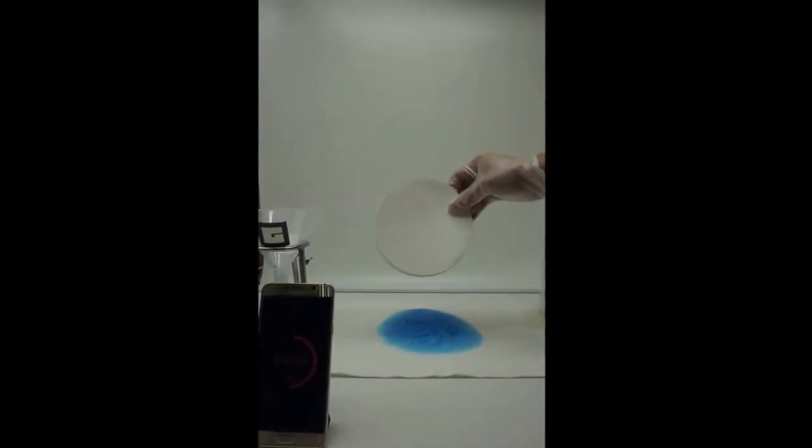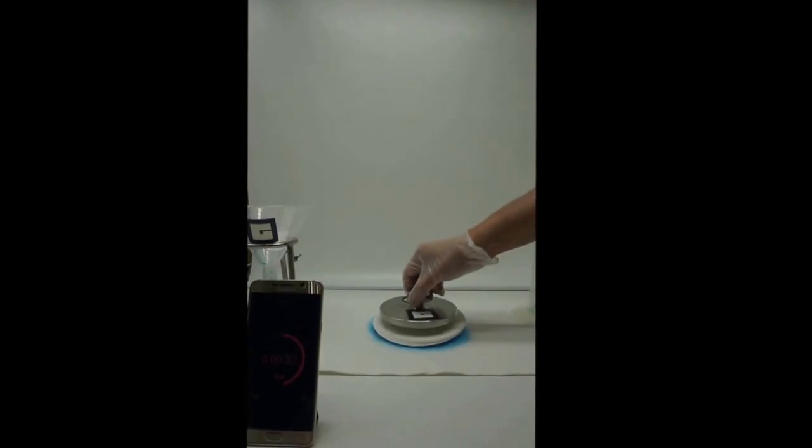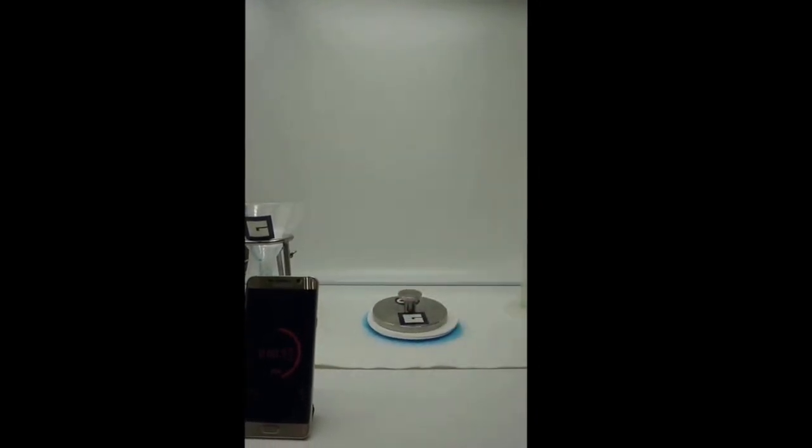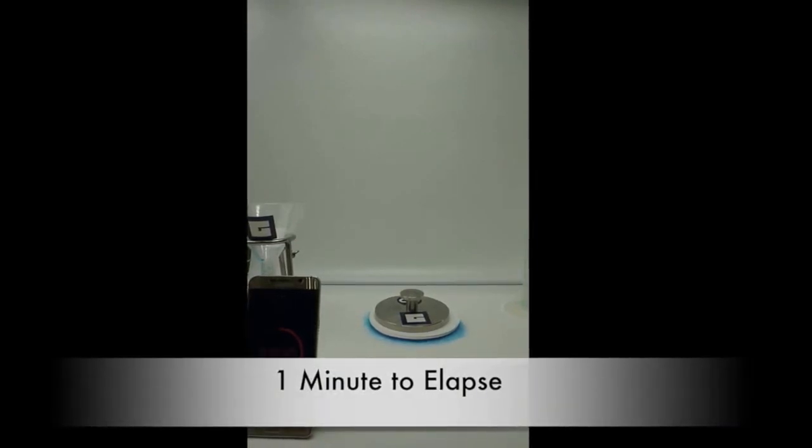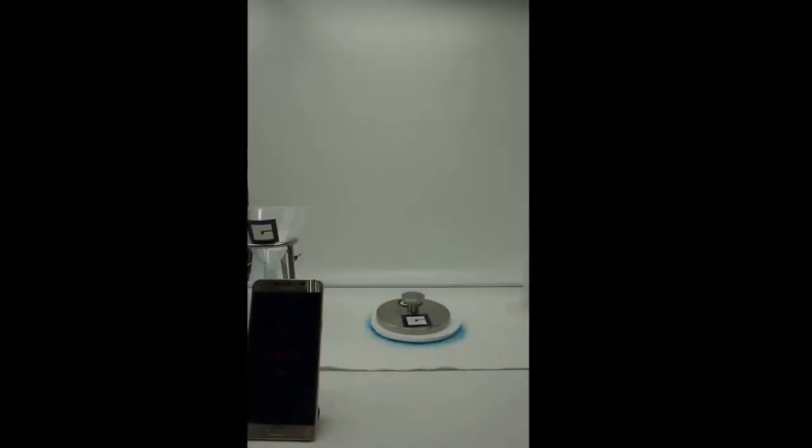After one minute elapses, a stack of fast absorbing filter paper is placed on top of the soiled region. A metal weight weighing 2 pounds is placed on top of the stack of filter paper to apply pressure.